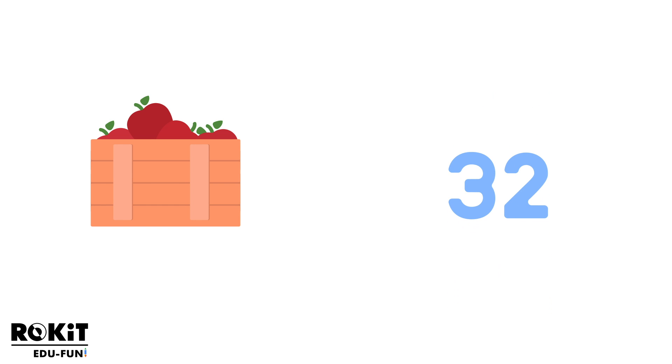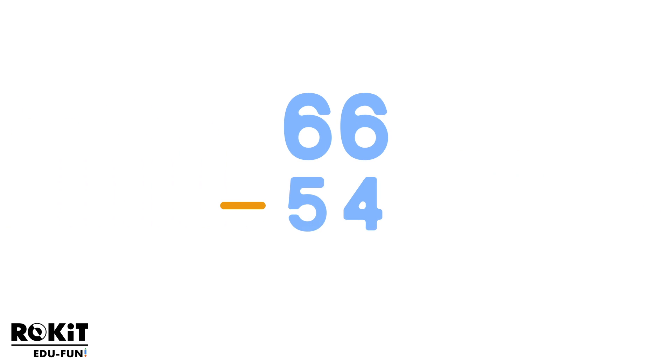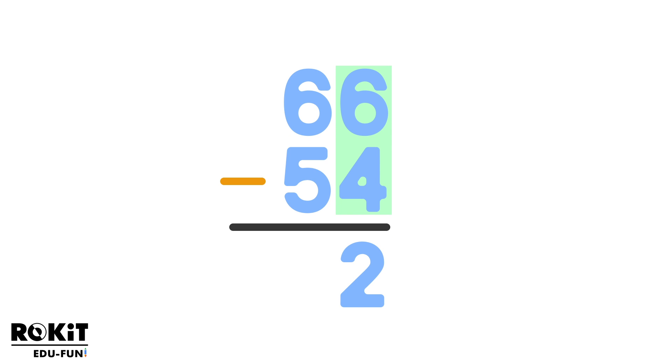Now let's try another subtraction problem. How about 66 minus 54? First, let's do the right column, which is the ones column. 6 minus 4 equals 2.